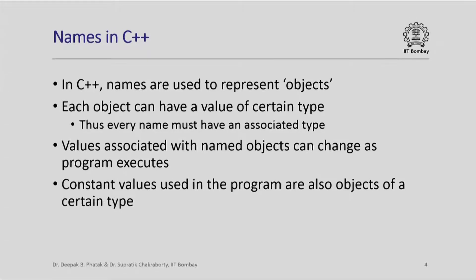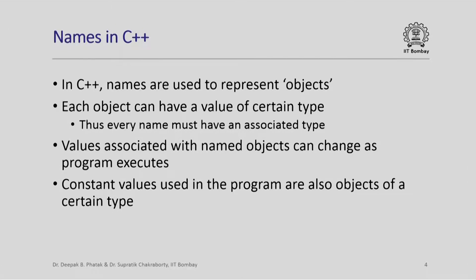The value associated with the named object can change as the program executes. However, the type associated with the object stays the same. Even constant values used in a program can be thought of as objects of a certain type whose values do not change as the program executes. So what we are going to see in this lecture is how to assign names to different objects and how to declare their types in a C++ program.